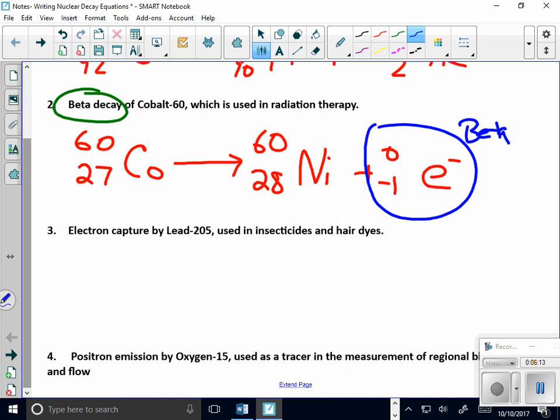This process changes a proton into a neutron and decreases the atomic number by one. So I have now electron capture. So I have lead, 205, and it is 82. Now, I just told you that when we have electron capture, a proton is changed into a neutron.